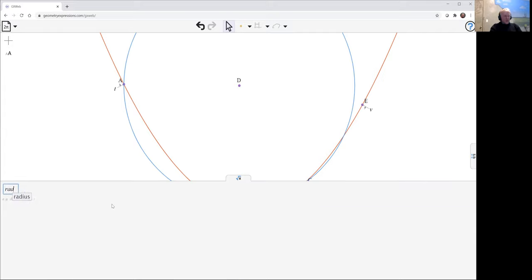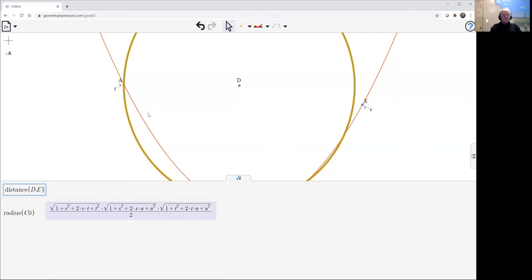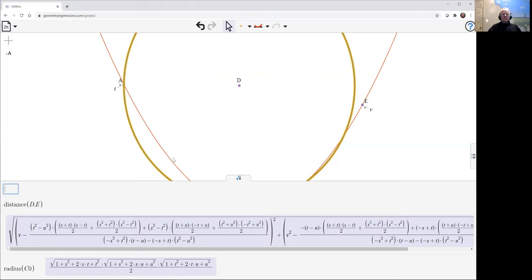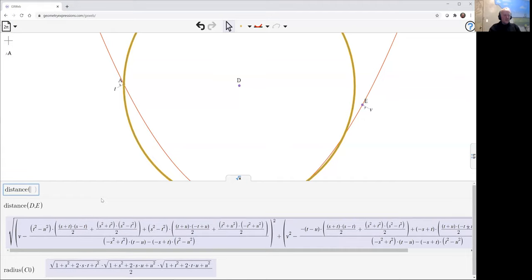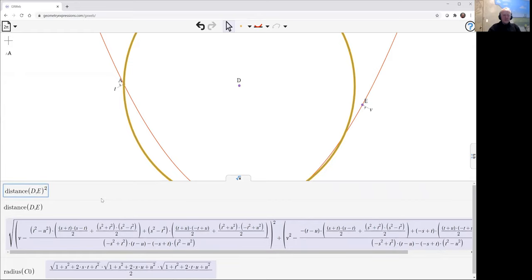So let's see what we can get here. The radius of the circle is this. And the distance from the center, from d to e. What I want is for one to equal the other. But they've both got square roots in them. I'd be more likely to get a nice answer if I look at the squares of them. So let's look at the distance from d to e squared and subtract the radius of c naught squared.